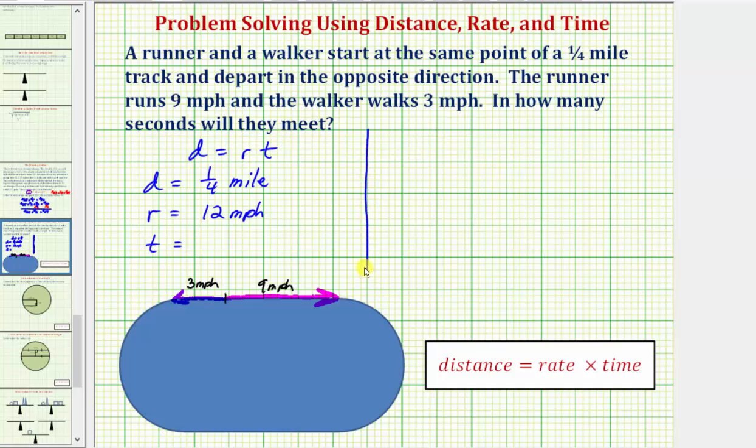So let's go ahead and set this up. Distance d equals one-fourth of a mile equals the rate times the time, which would be 12 times the unknown time t. So we have times 12t. Normally to solve for t, we would divide both sides by 12.